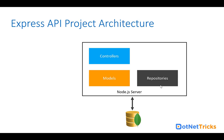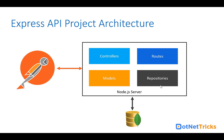We will define controllers where we will write our presentation logic — whatever request a user makes, the request handling code will be in the controller, and data access code will be in the repository. We will also have routes for multiple APIs. We will define routes for product, category, and other entities. For testing the API, I will use Postman. I'm not creating any front end, but based on the same API, you could build a front end using Angular, ReactJS, or any other framework.